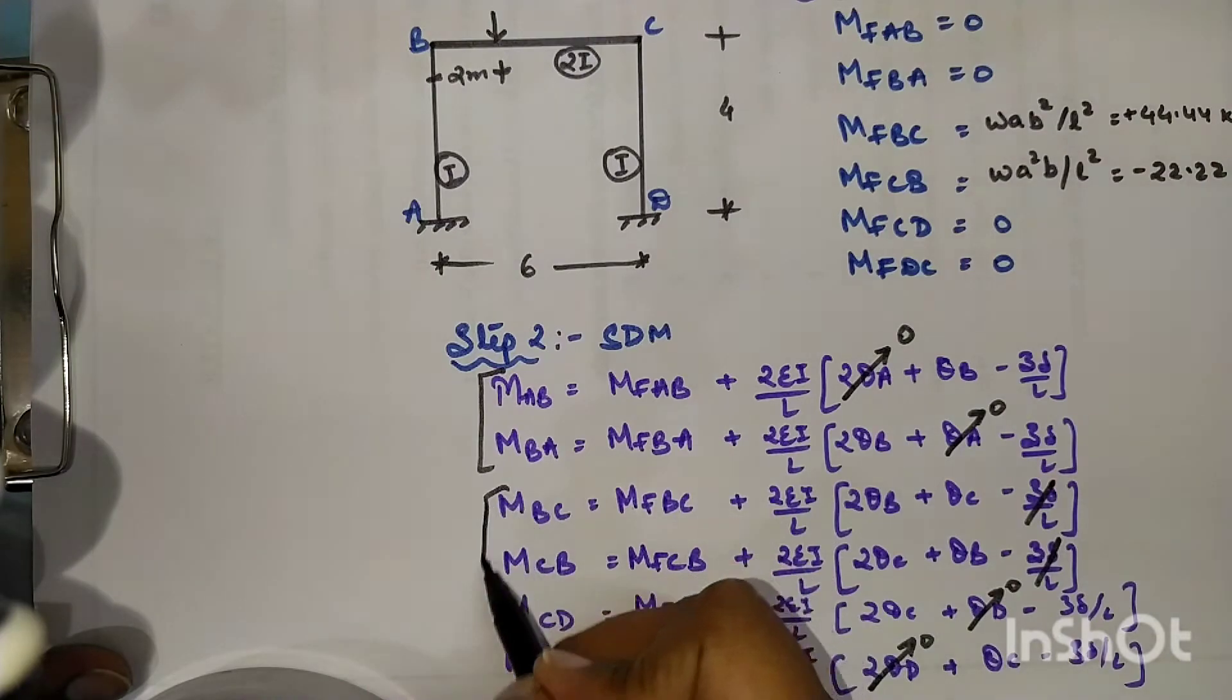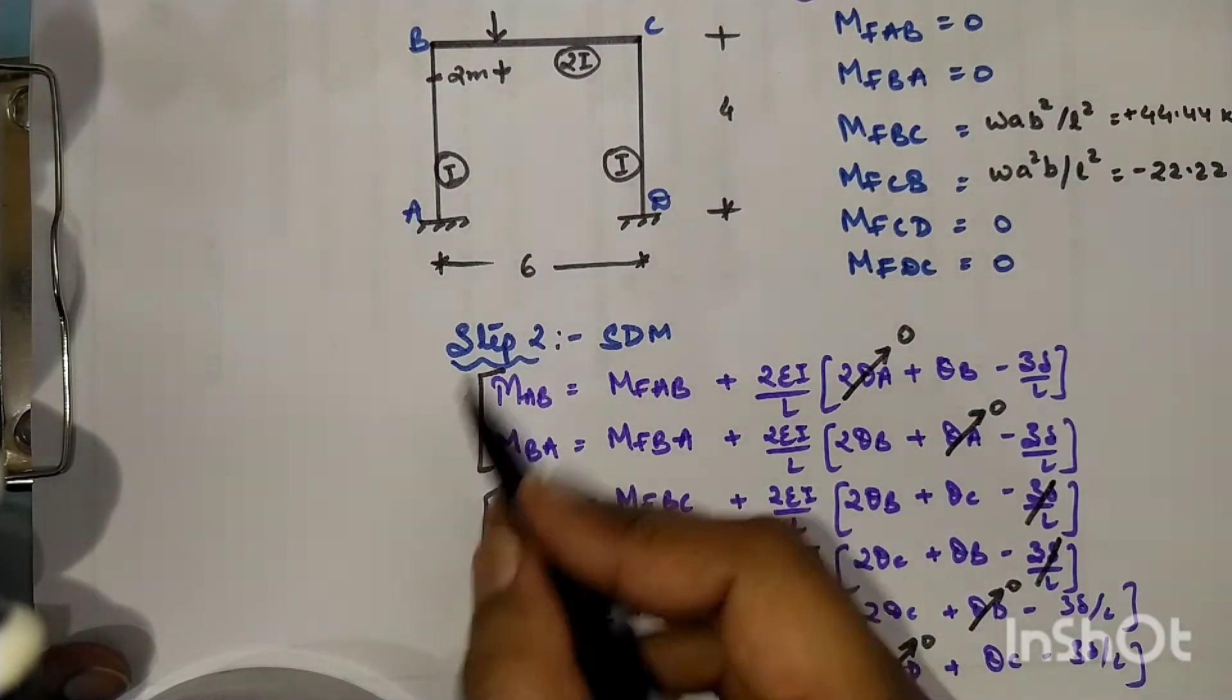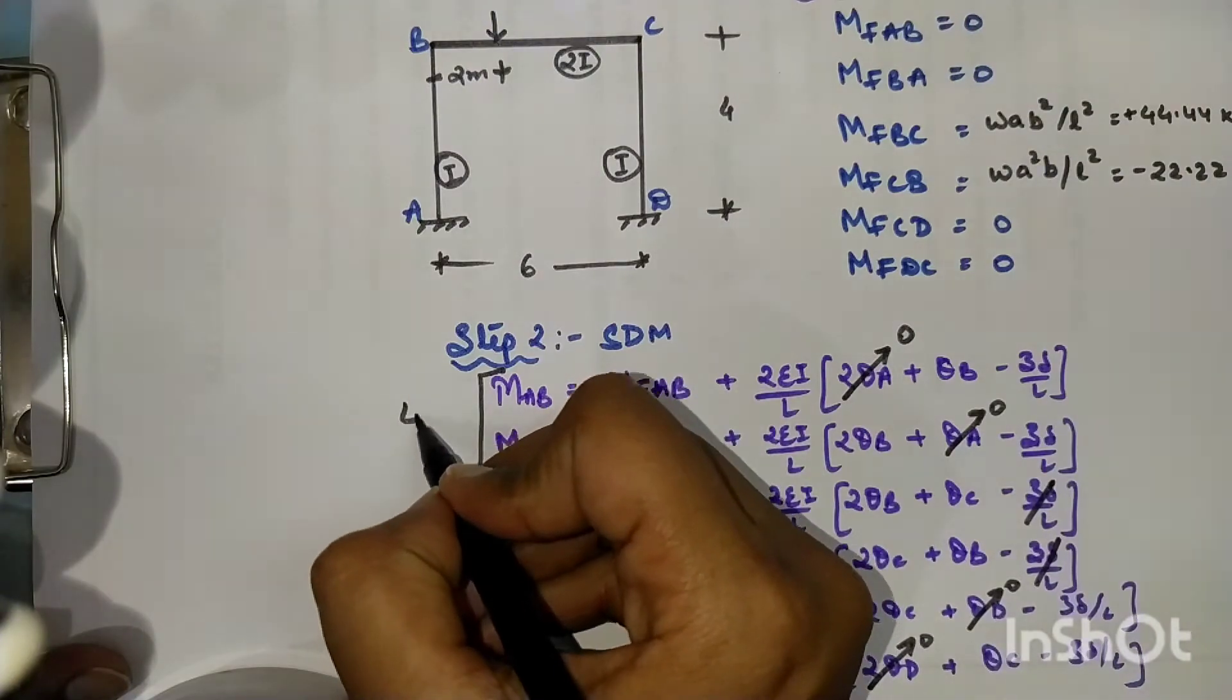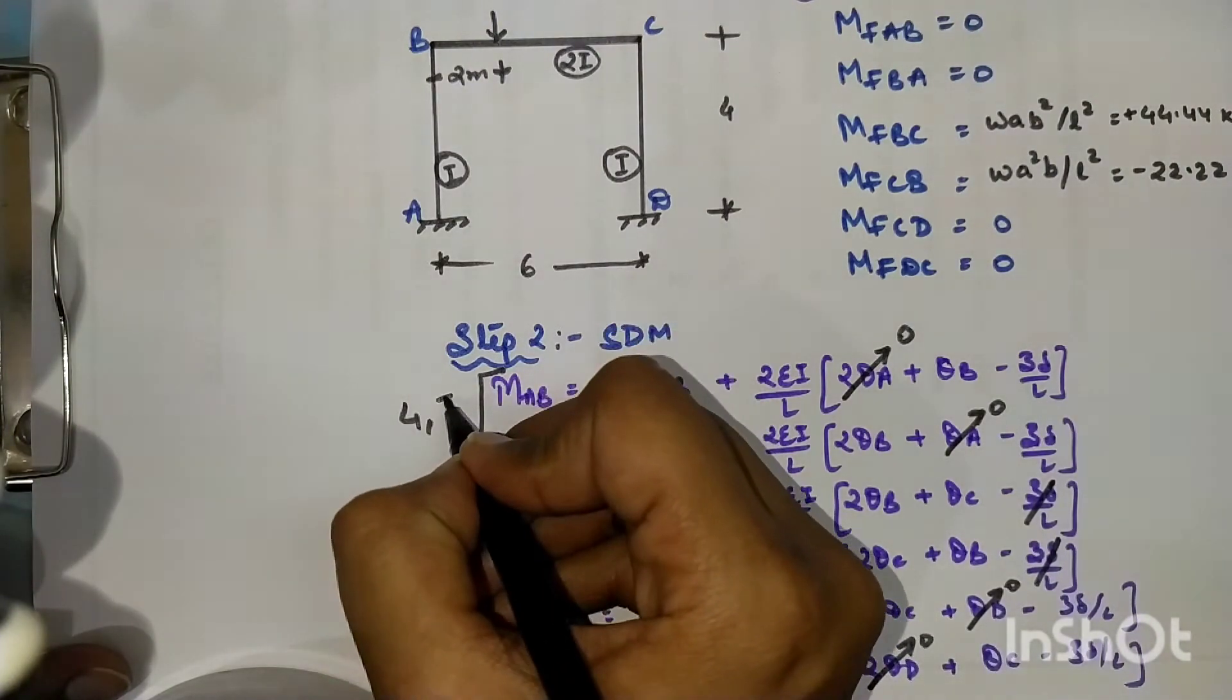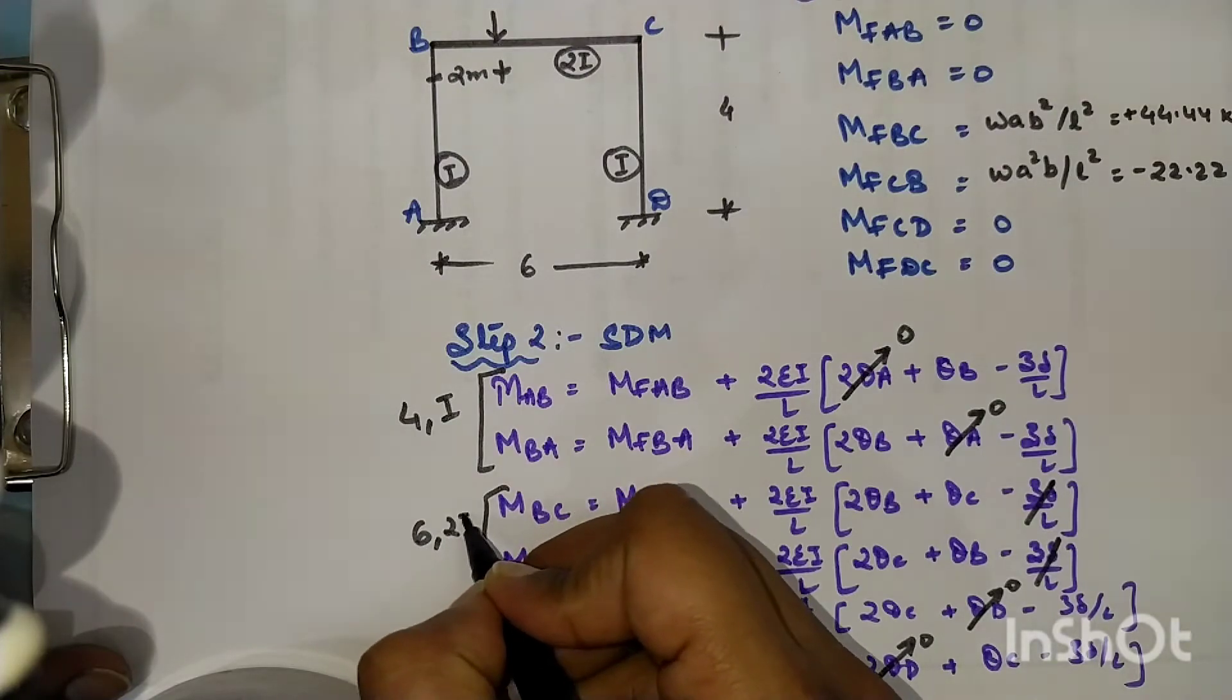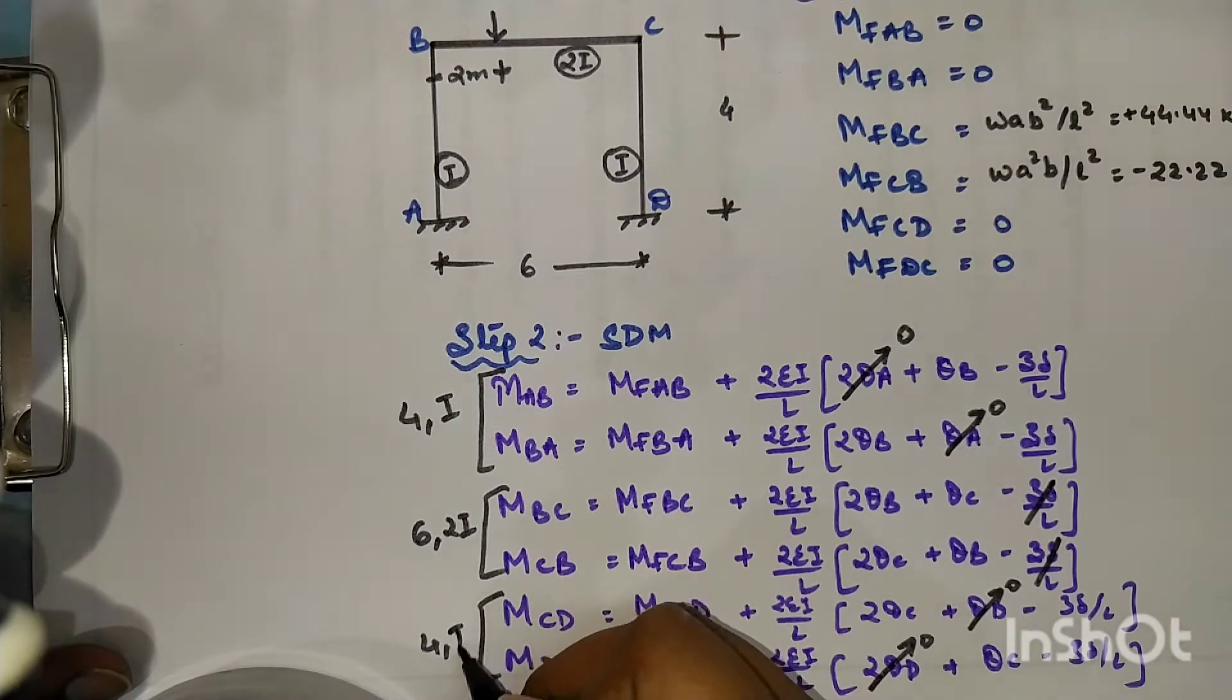In addition, member with its required EI and length will be written here only, so that chances of mistakes are less. So AB member: four is length, EI value one. Next BC is six, EI value two. Next is four, EI value one.